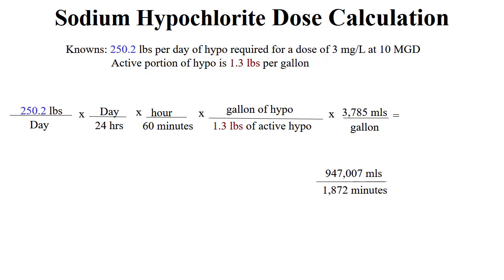The hypo calculation is the same as the alum calculation, except we have 1.3 pounds per gallon in the denominator instead of 5.4 pounds for alum. We cancel units — pounds, days, hours, and gallons all cancel — and we're left with mL per minute. Multiplying 250 × 3785 gives 947,007 in the numerator; 24 × 60 × 1.3 gives 1,872 in the denominator, which gives us a feed rate of 506 mL per minute of hypo to dose 3 mg/L at 10 MGD.